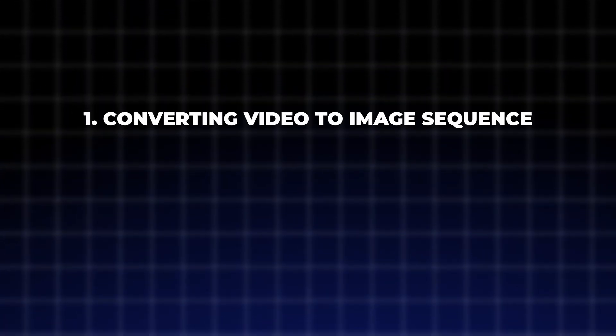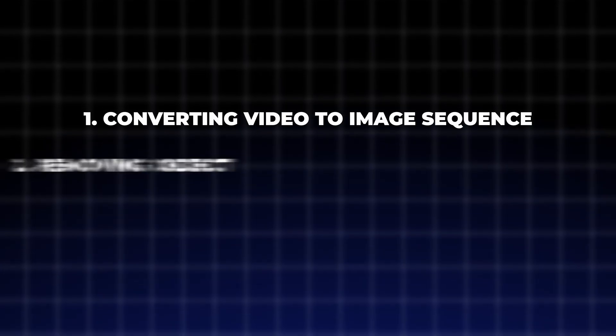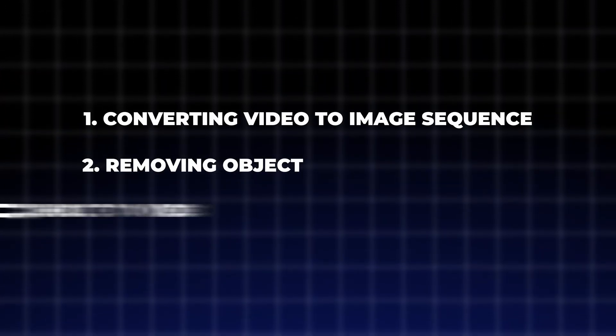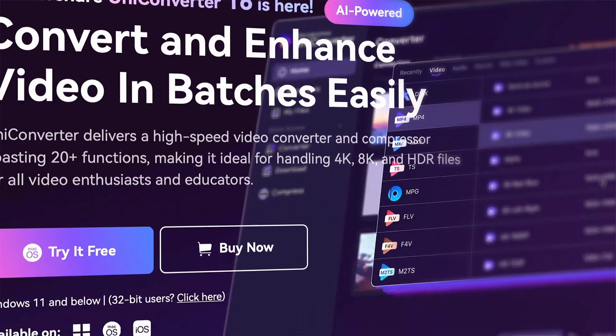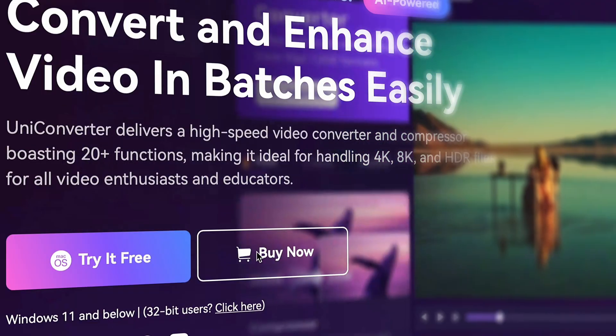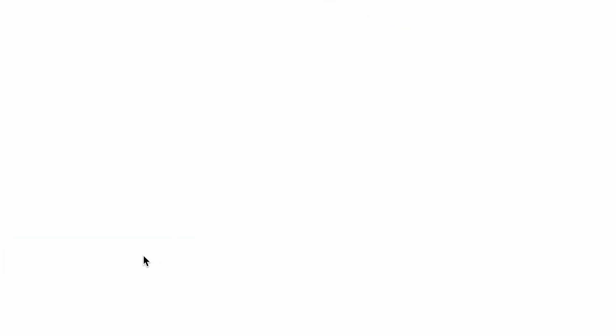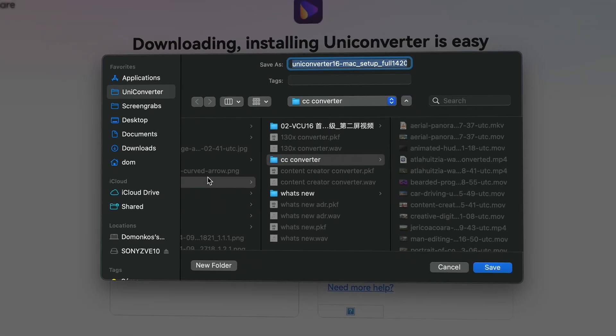So here is what we're going to do: we'll convert a video clip to an image sequence, then we'll remove the object from the images, and then we're going to convert the image sequence back into a video. I'm going to demonstrate it on the Starbucks cup clip. So before we get into it, be sure to download UniConverter from videoconverter.wondershare.com. Alright, let's get to work.